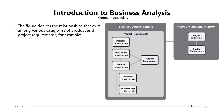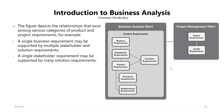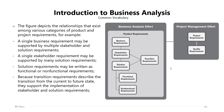This figure depicts the relationships among various categories of product and project requirements. In the business analysis effort, there are four types: business requirements, stakeholder requirements, solution requirements, and transition requirements. Solution requirements can be functional or non-functional. A single business requirement may be supported by multiple stakeholder and solution requirements, and a single stakeholder requirement may be supported by many solution requirements. Transition requirements support the implementation of stakeholder and solution requirements, representing the link between product and project requirements.